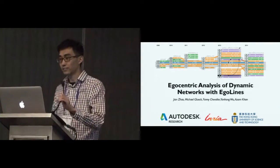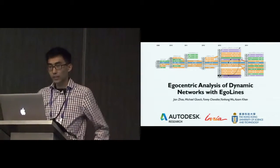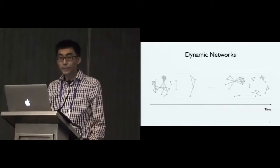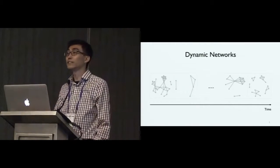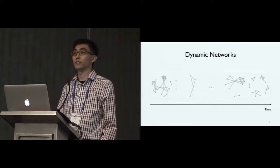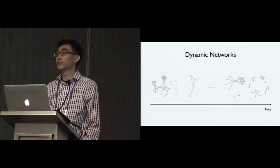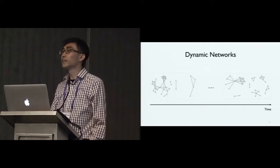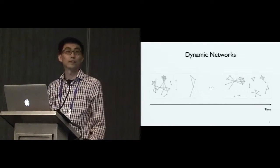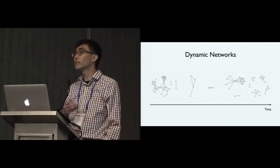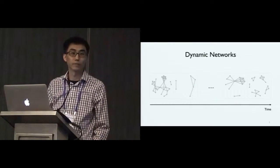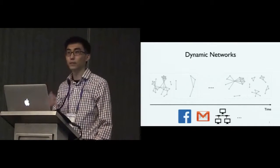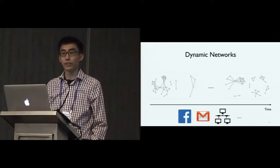Thank the chair for the introduction. Let's go to the topic directly. Dynamic networks, by definition, is a network whose structure is changing across time. At any time step, the nodes and links can be added or removed. This type of data is quite common in many application domains, such as social networks, email networks, and device communication networks.